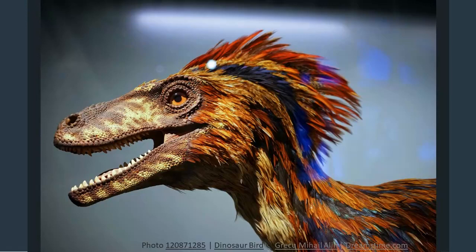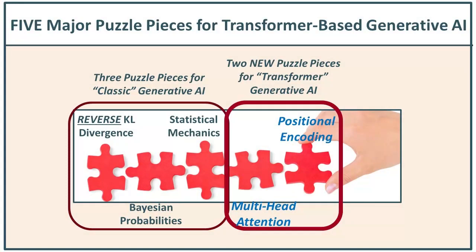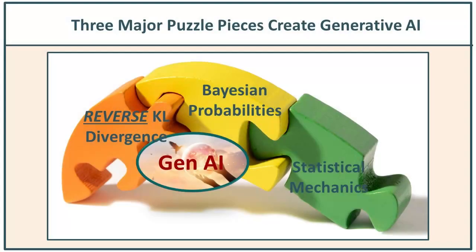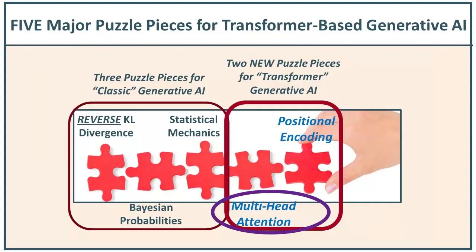Similarly, when we study transformers, we put our attention on what makes them work. Even in the original paper, there's really no connection back to that base layer of generative AI methods. For our benefit, what we want to do is think of these as two entirely different layers. The first layer — three big puzzle pieces — is the Kullback-Leibler divergence, Bayesian probabilities, and statistical mechanics. For transformers, we keep those and add in multi-head attention.